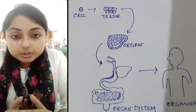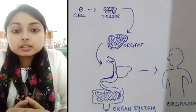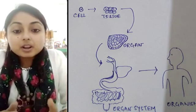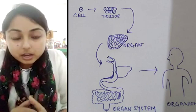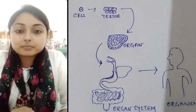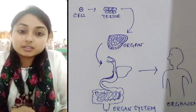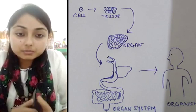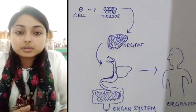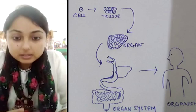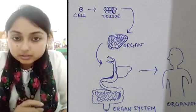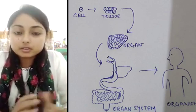Several tissues come together and combine to form an organ. Several organs combine to form an organ system. Several organ systems come together to form an organism. So the hierarchy is: cells, tissue, organ, organ system, organism.